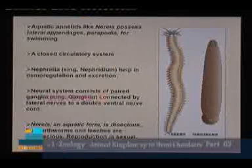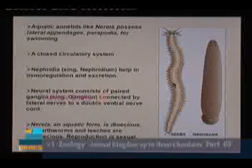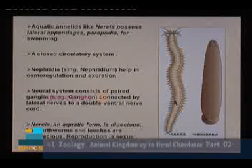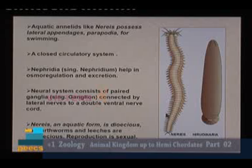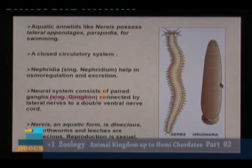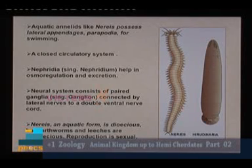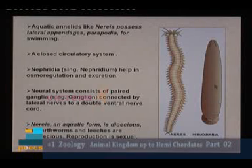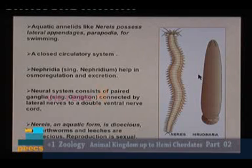Setae or parapodia help in locomotion in different annelids. Nereis is a marine annelid with parapodia on either side of the body, helping for swimming. In the earthworm, setae help for locomotion. In the case of leeches, neither setae nor parapodia are present, but they have longitudinal and circular muscles as well as anterior and posterior suckers for locomotion. Scientific name of leech: Hirudinaria.